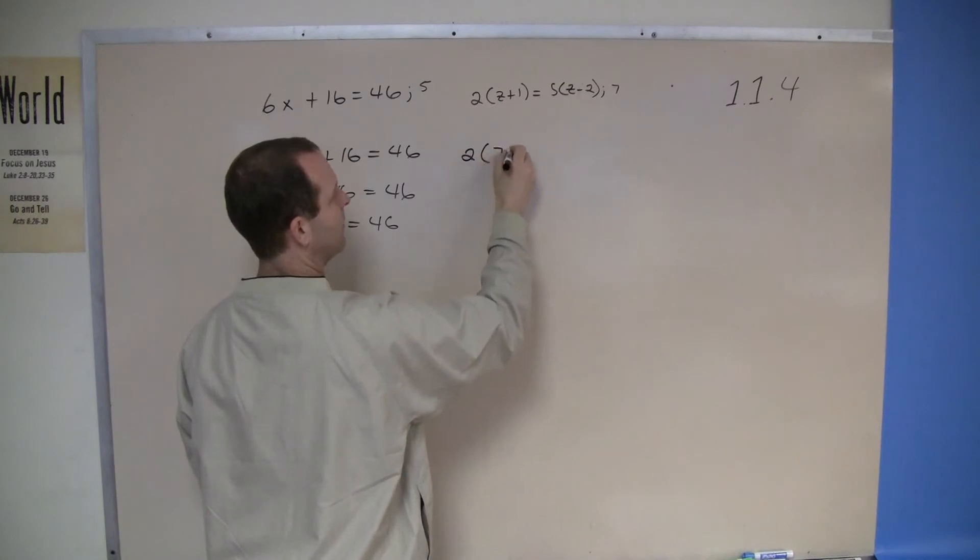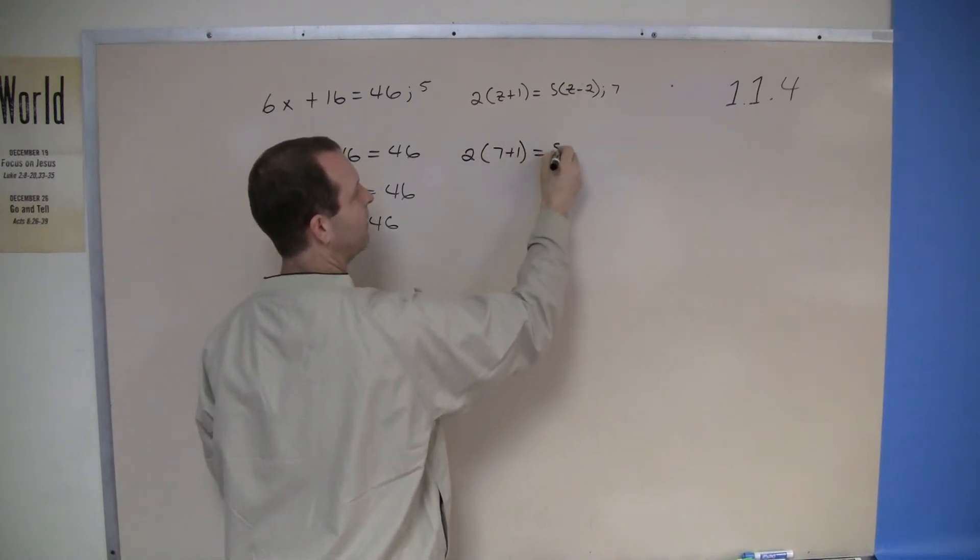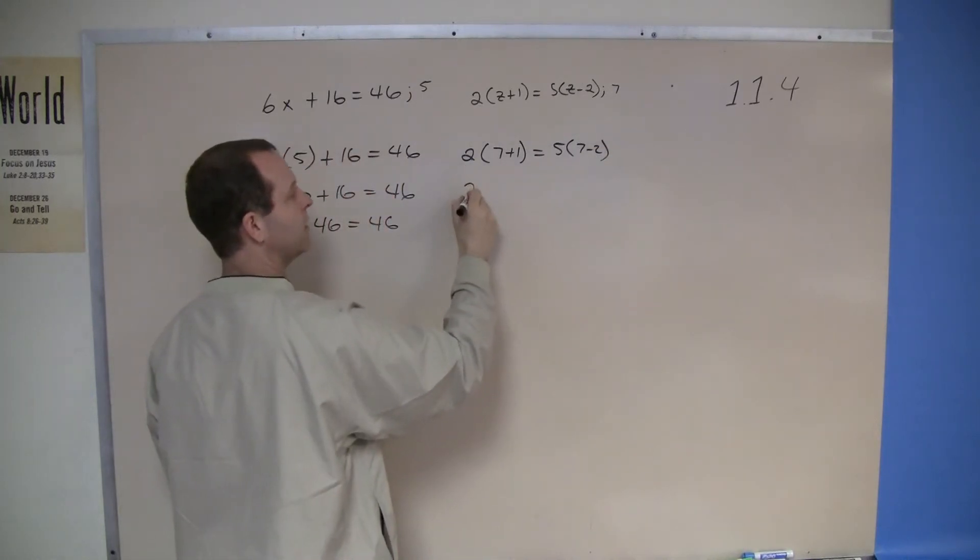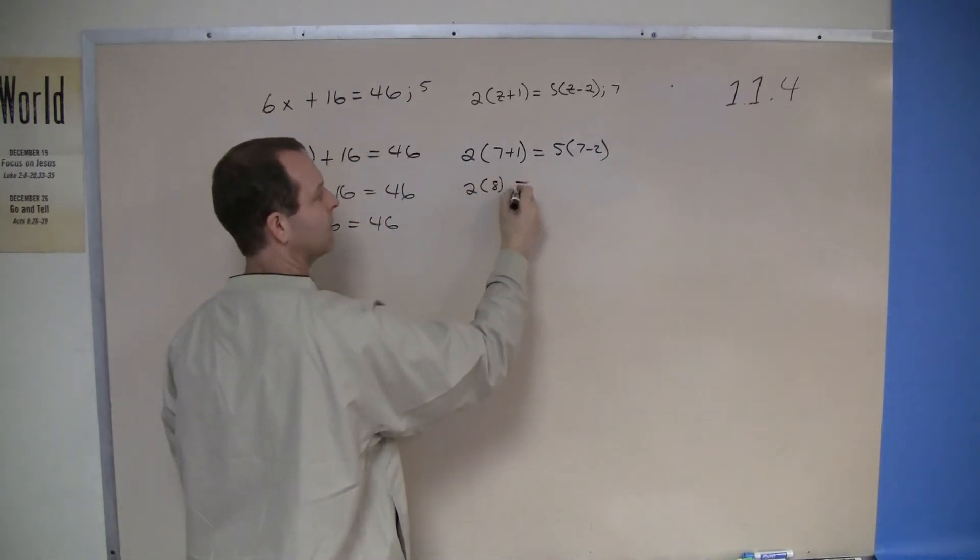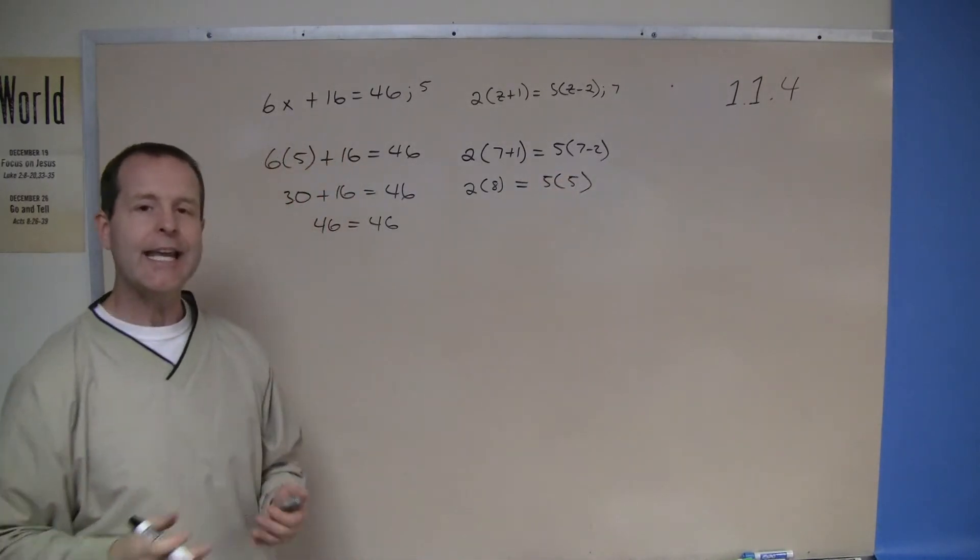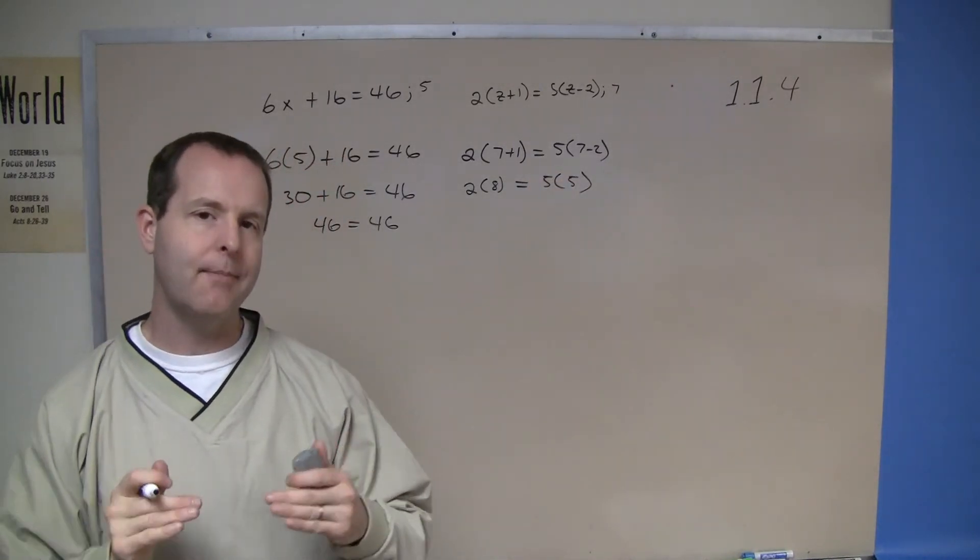2 times 7 plus 1 equals 5 times 7 minus 2. 2 times 7 plus 1 is 2 times 8 equals 5 times 5. And again notice I'm only doing one step at a time.